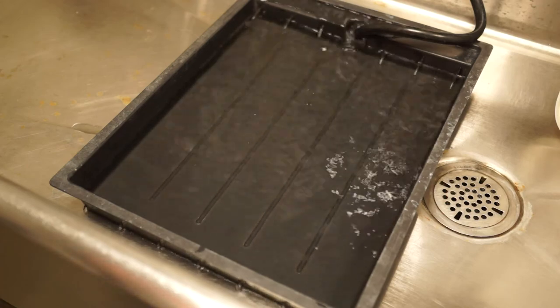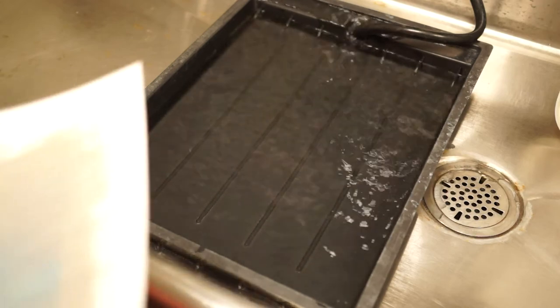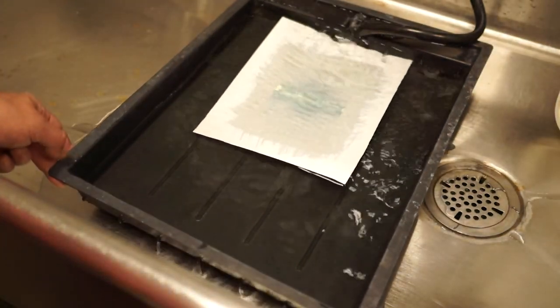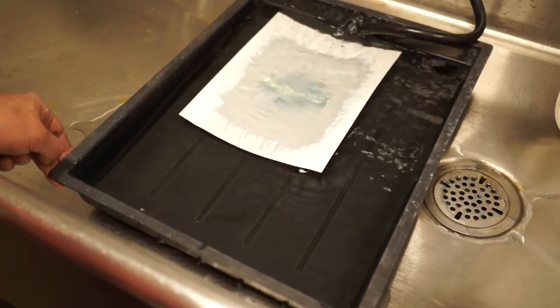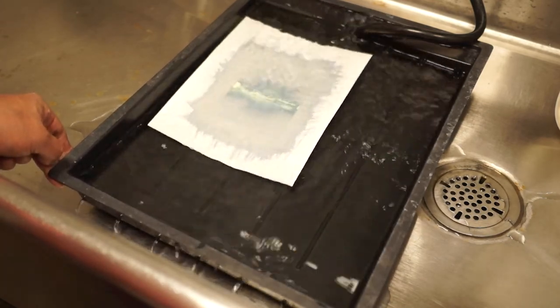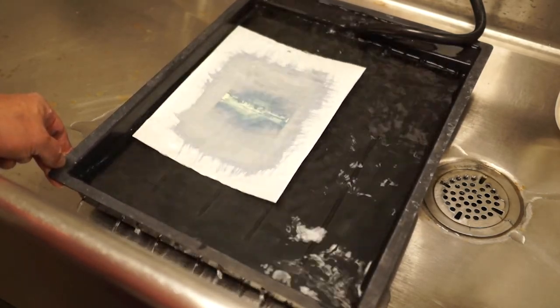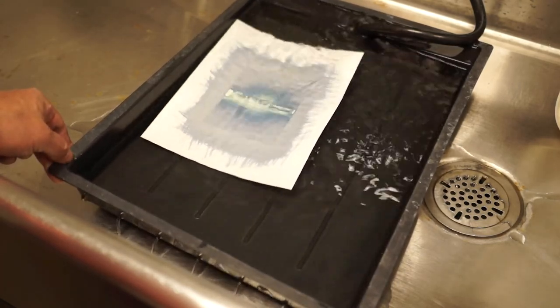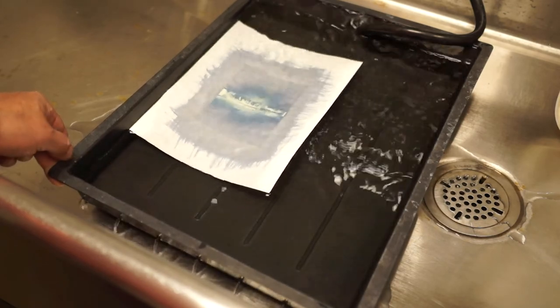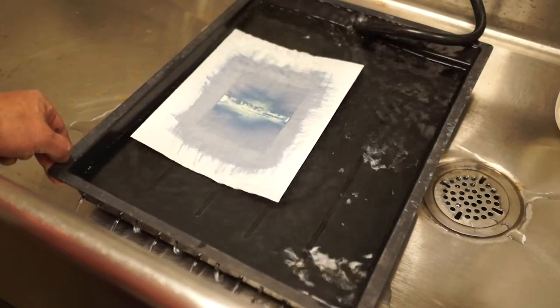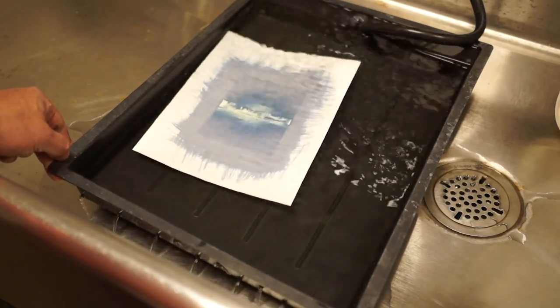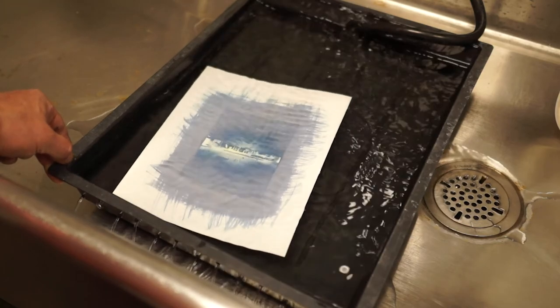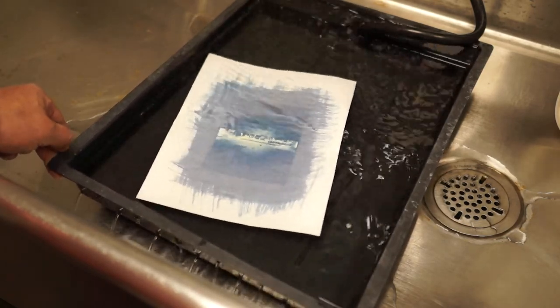All there is to processing a cyanotype is washing it in water. So I'm in the back darkroom here, and slip the paper in and slosh it around a little. And you'll notice that the highlights wash out first, and then as it's in the water, the shadows will become deep blue. And it'll continue getting darker as it dries for about one day. This one seems like it was exposed pretty well.